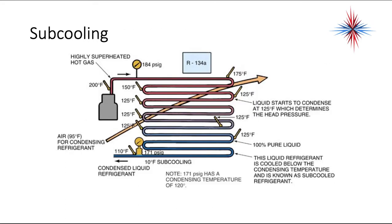Looking at a condenser diagram using R-134A — R-22 and R-410A may have slightly different pressures and temperatures — coming out of the compressor on the discharge line, we have a highly superheated hot gas, around 200 degrees Fahrenheit. The pressure at this point is 184 PSIG. As refrigerant starts going through the condenser coils, it begins losing sensible heat.